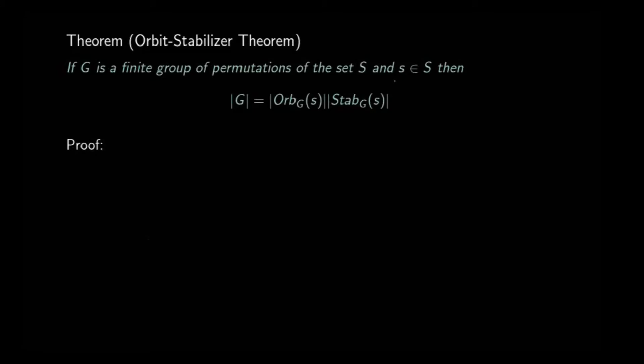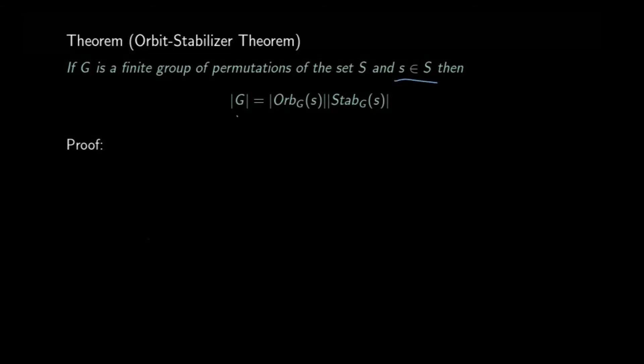Let us now prove the orbit-stabilizer theorem. The theorem states that if G is a finite group of permutations on the set S and s is an element of S, then the number of elements in G equals the number of elements in the orbit of s times the number of elements in the stabilizer of s.